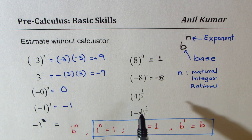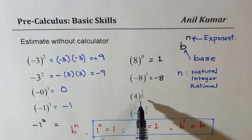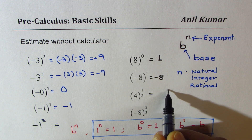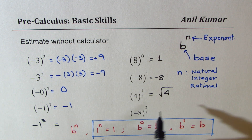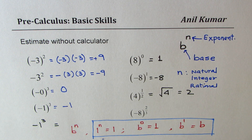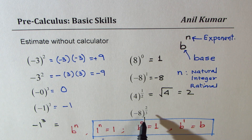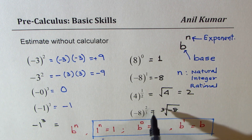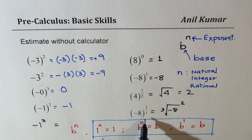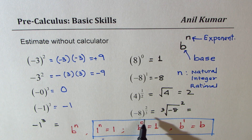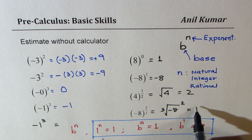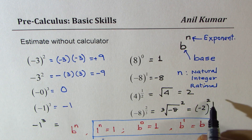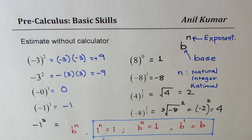Now let's move forward. Here we have 4 to the power of half. Half means square root, so treat it as the square root of 4, which is 2. In the next case, we have minus 8 to the power of 2 over 3 — a combination. In such cases, we find the cube root first and then square. Cube root of minus 8 is minus 2, and when you square it, square is always positive, so we get 4 as our result.